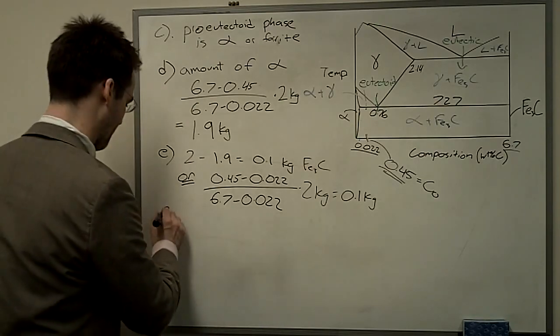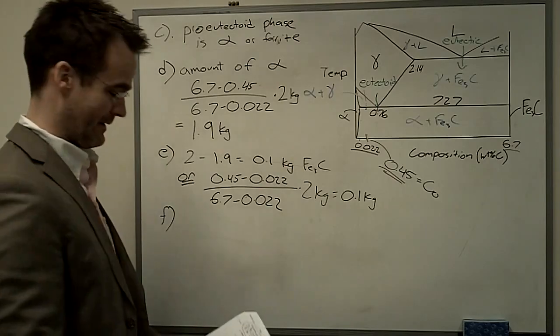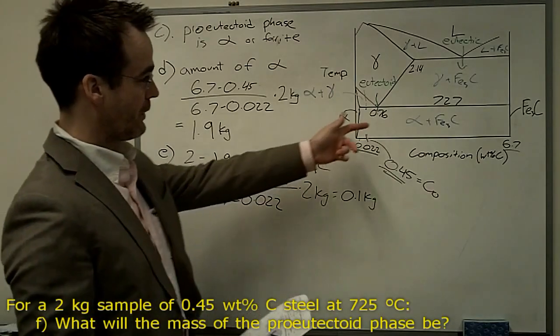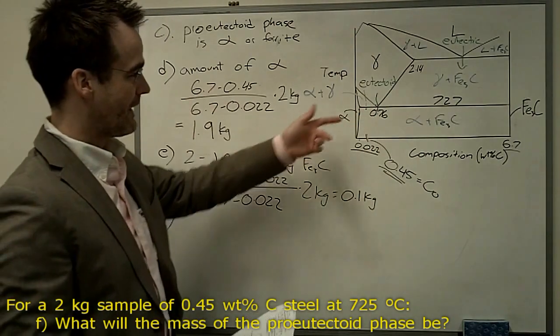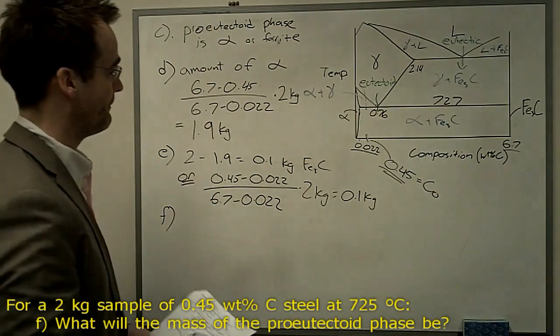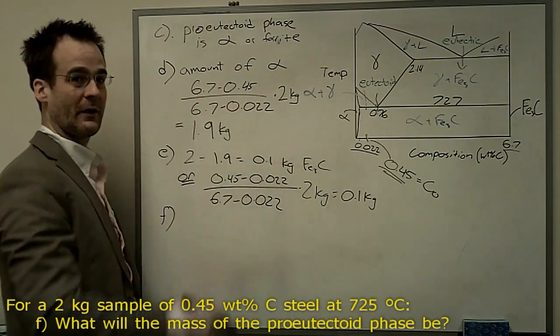Okay. Question F. It says now, all right, we know how much ferrite there is in total. How much of that is actually the primary phase, or the pro-eutectoid phase? The phase that formed above the eutectoid isotherm.